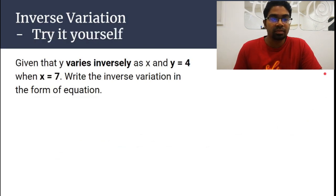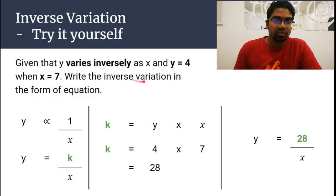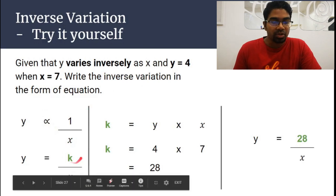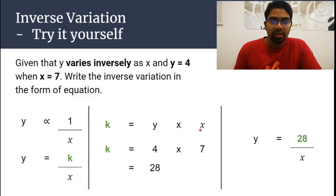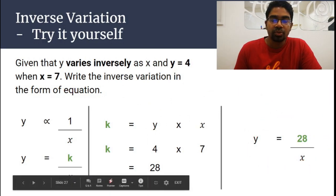Now pause the video and try this yourself. This is the same type of question with different values: y varies inversely as x, and y is 4 when x is 7. Write the inverse variation as an equation. First: y is proportional to 1 over x, so y equals k over x. Rearranging, k equals y times x. Substituting y = 4 and x = 7 gives k = 28. So y equals 28 over x.